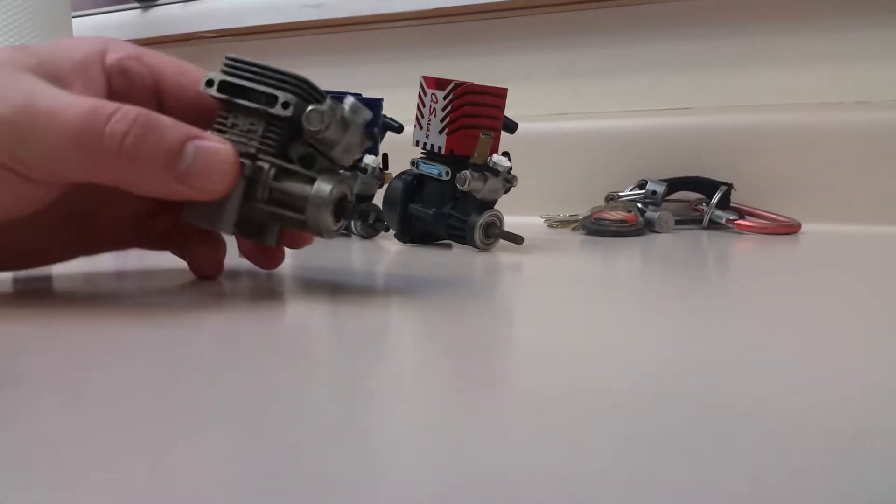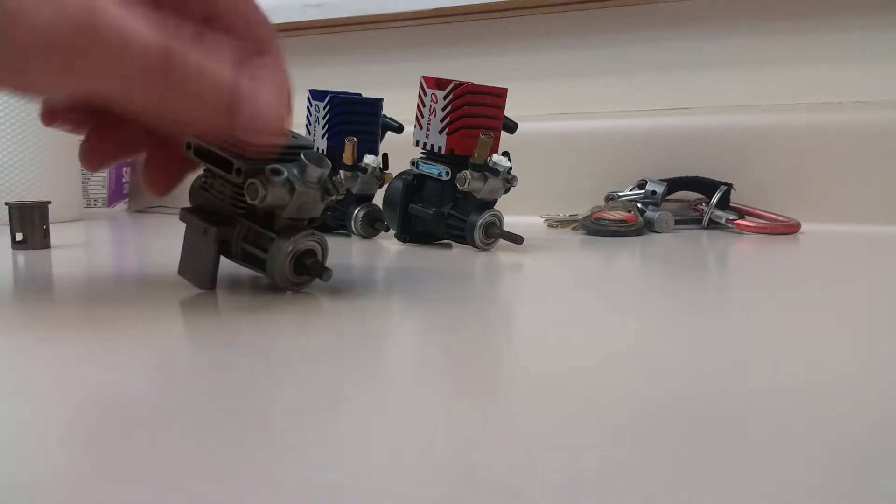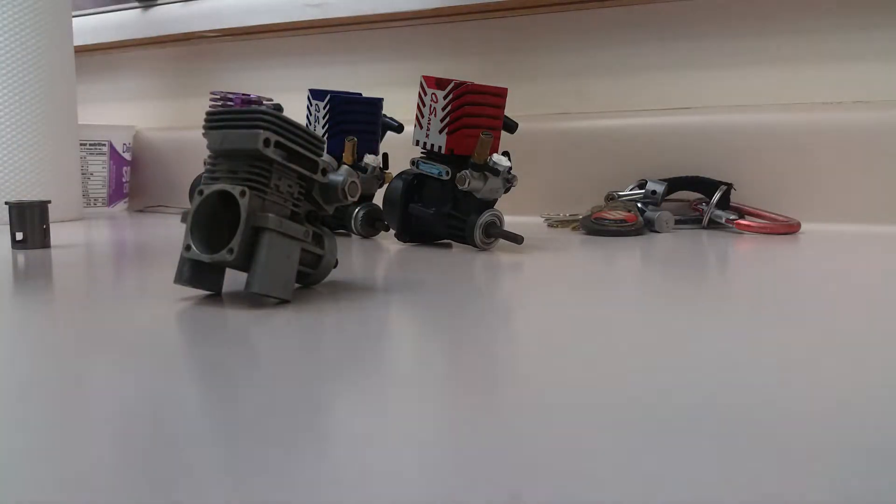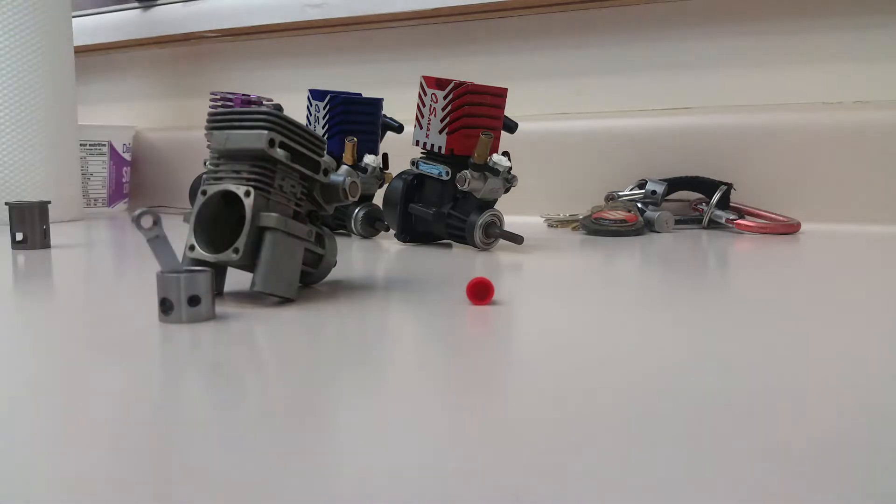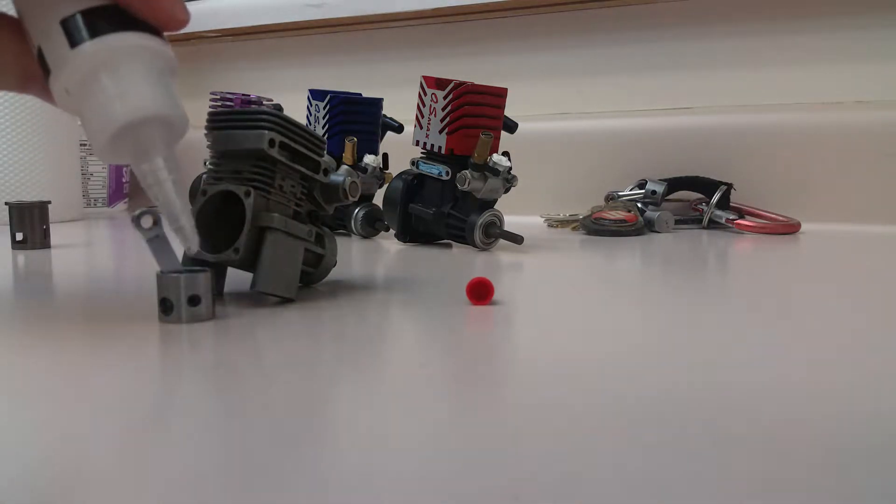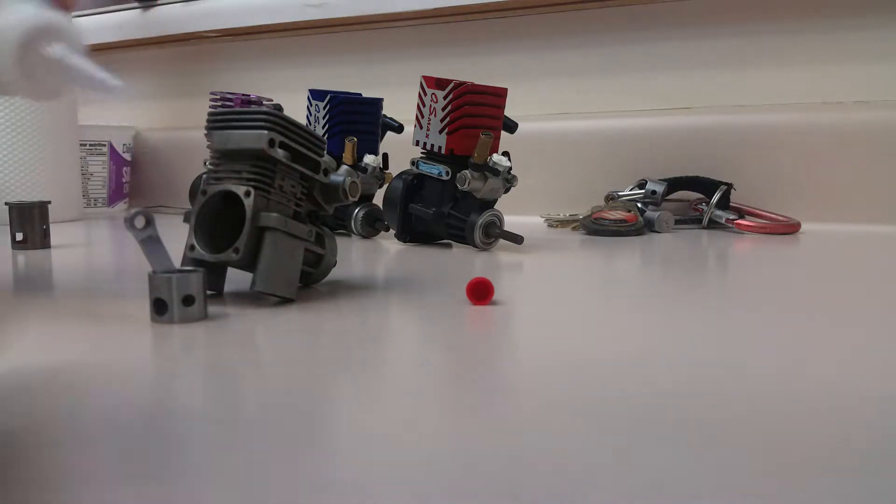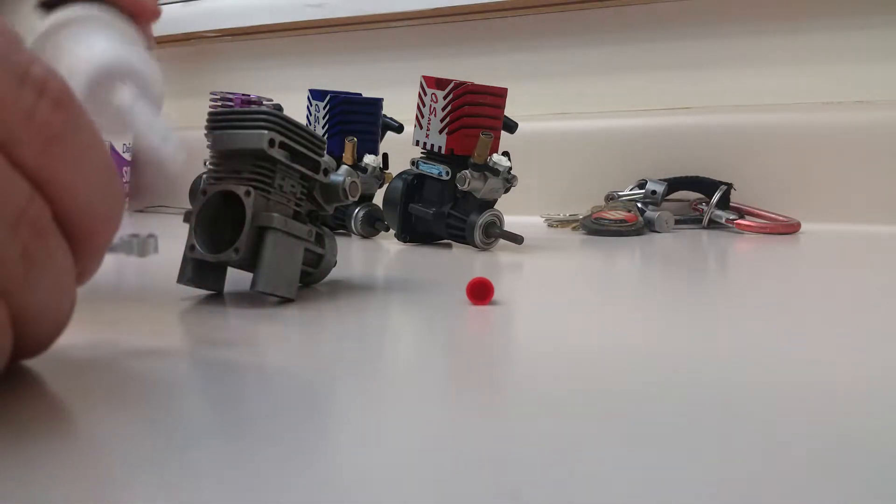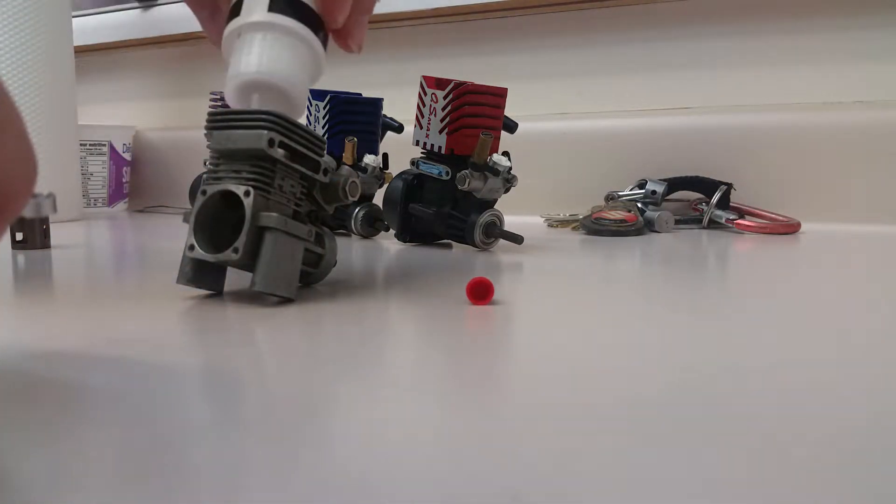Okay, so we have our crankcase here. This is an HPI that's damaged, but we're just gonna use it as an example. So first off, make sure you put some oil down there, put some oil in there, a little bit on the wrist pin - that's important.